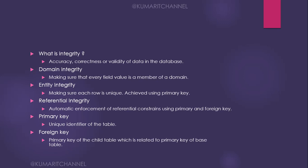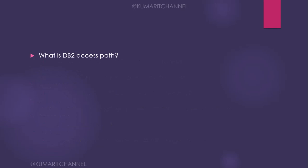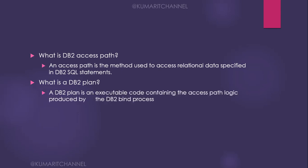What is a DB2 access path? An access path is a method used to access relational data specified in DB2 SQL statements. What is a DB2 plan? A DB2 plan is an executable code containing the access path logic, produced within the DB2 bind process. It can consist of one or more DBRMs.